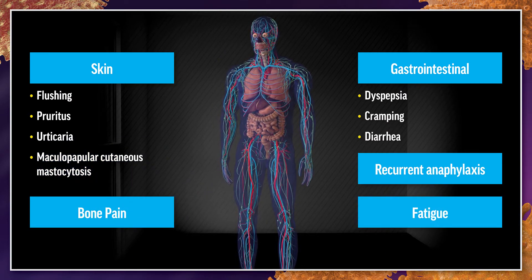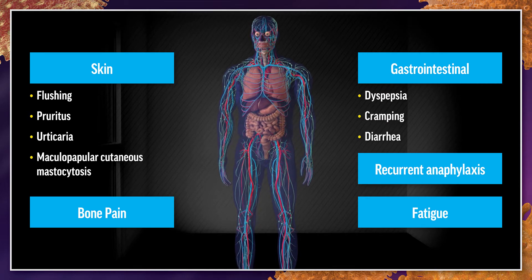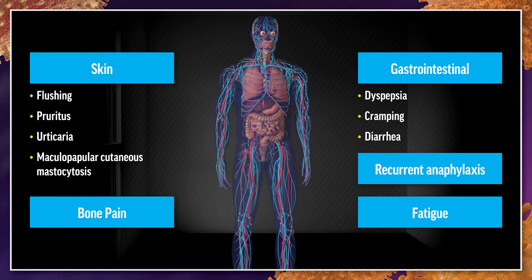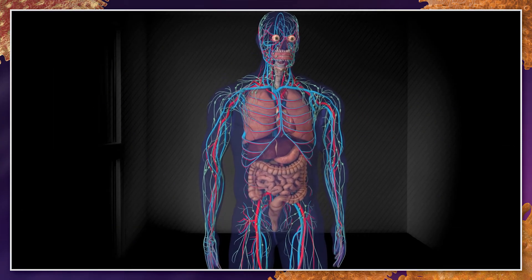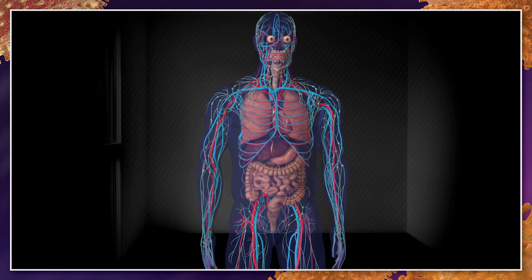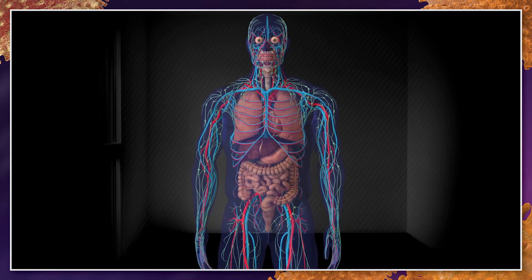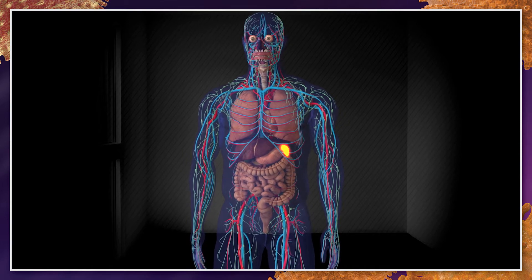The majority of patients with non-advanced SM have maculopapular cutaneous mastocytosis, also known as urticaria pigmentosa. The symptomatology of SM varies depending on the affected organ and, in addition to the allergic and hypotensive reactions, can include enlarged liver, spleen, and/or lymph nodes. Symptoms of SM can be triggered by reactions to insect stings and bites, medications, emotional stress, surgical procedures, and viral illnesses.